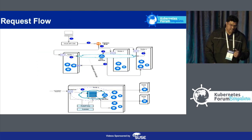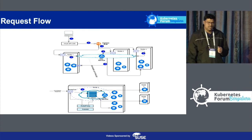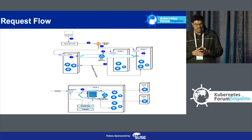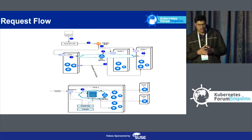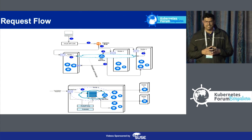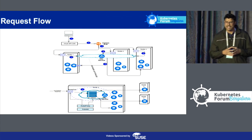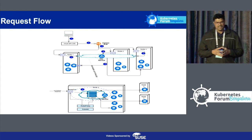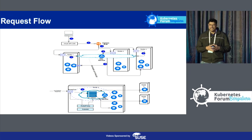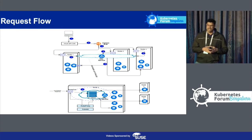Before getting into the details of the termination lifecycle, let's understand the request flow. When a client sends a request, we use an API Gateway in Intuit. The API Gateway forwards the request to the ALB ingress, which then forwards the request on the node port to any node registered as a target in the ALB targets. From there, the node port looks up the IP tables of the node and resolves it to the appropriate pod, forwarding the request to the corresponding pod.